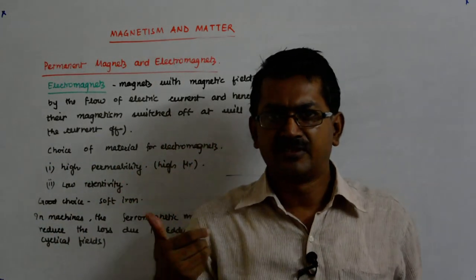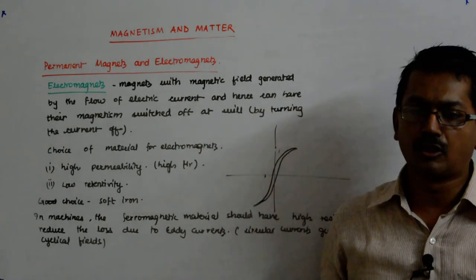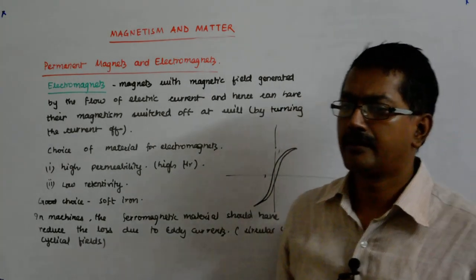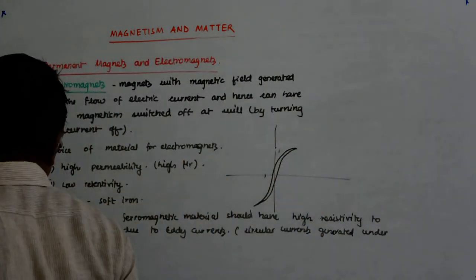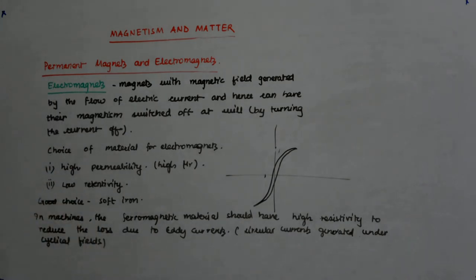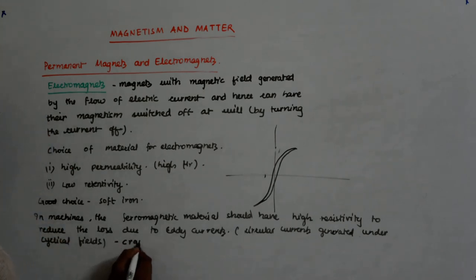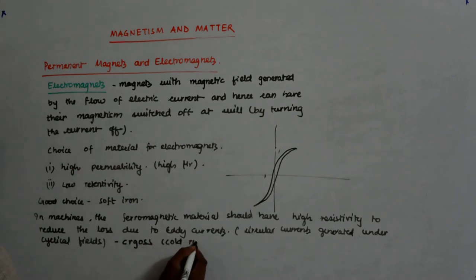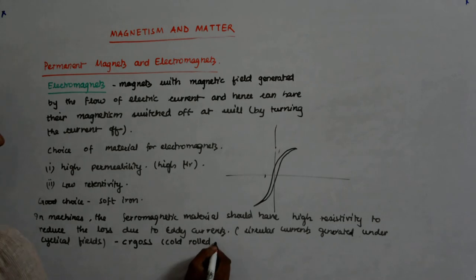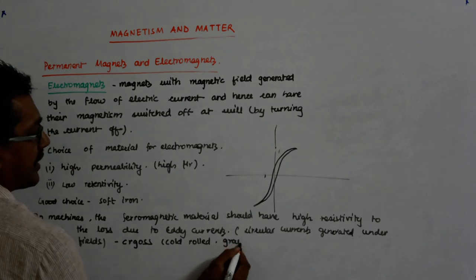But they are circular currents which arise due to Lenz's law and we do not want those currents to be very high. So my resistivity has to be high so that these currents are small. And how do I use that?